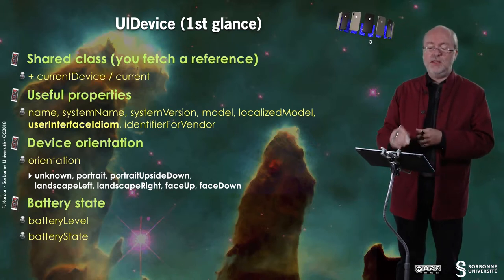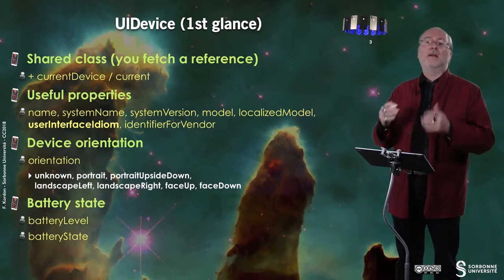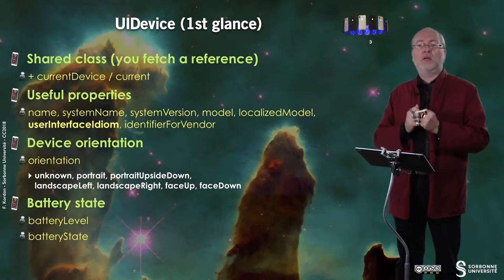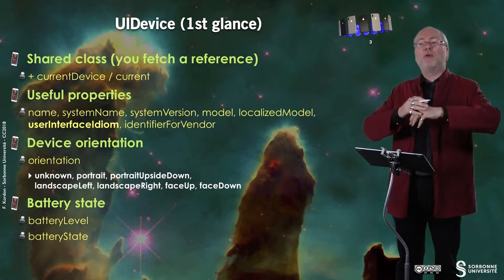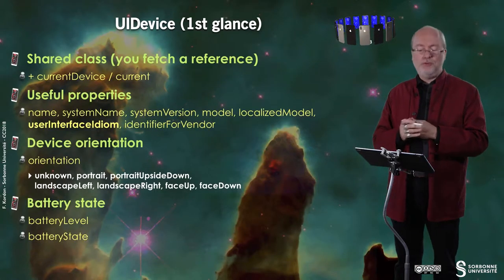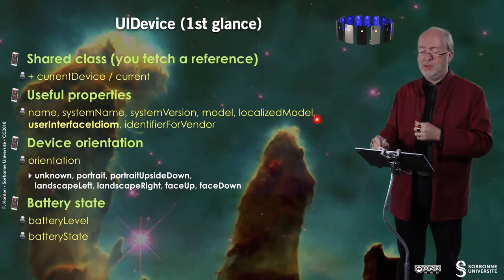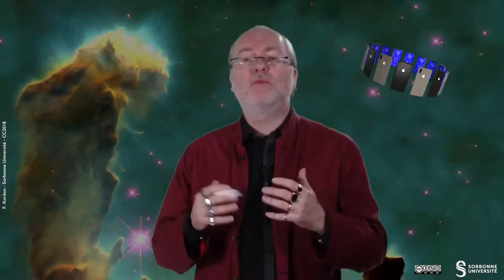In Objective-C you use `currentDevice`, and in Swift you use `current`. Once you have a reference to this shared object — which is the same for all applications running on the device — you can fetch information from useful properties such as name, system name, system version, model, and localized model. You can imagine clearly what each stands for.